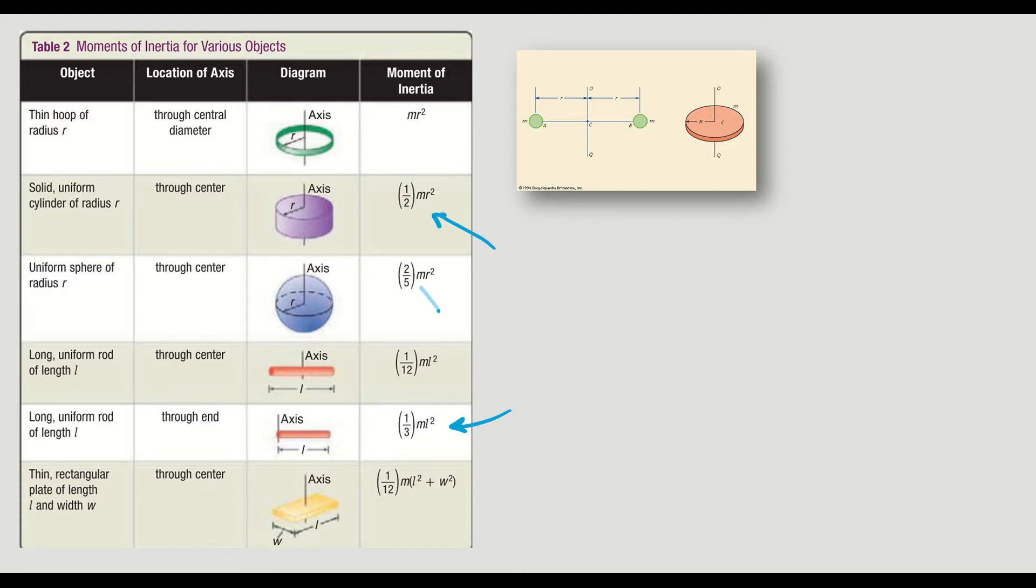A spinning sphere, 2/5 MR². Because the thing is, we have to change it because the mass, instead of at a single point right here, and all of the mass is in that point and then you are spinning it right here, the mass is distributed around the sphere.